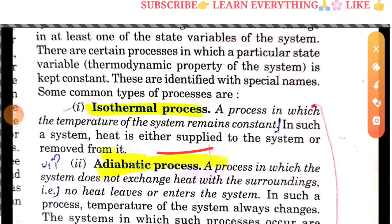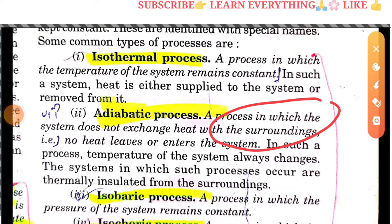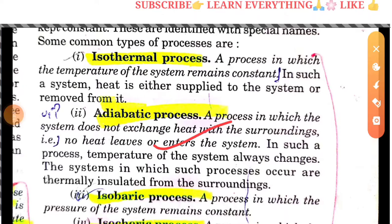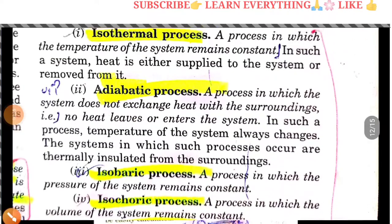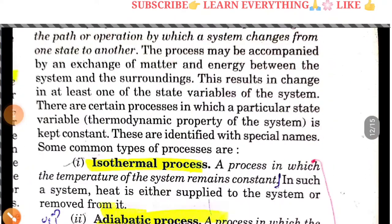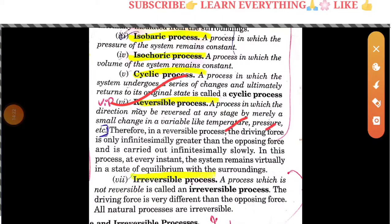In an adiabatic process, there is no heat exchange with the surroundings — no heat enters or leaves the system. The temperature of the system always changes in this process. The system must be thermally insulated from the surroundings. An isobaric process is one in which pressure remains constant. An isochoric process is one in which volume remains constant.